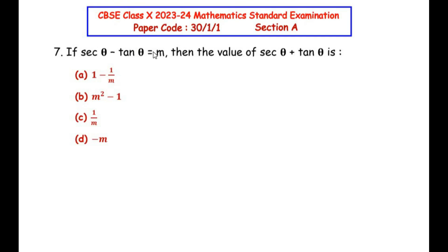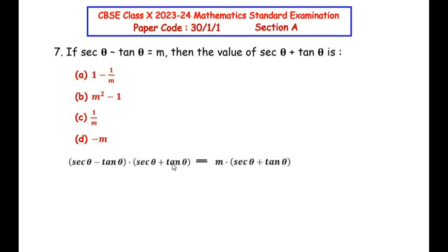We multiply both the left-hand side and right-hand side of the equation by (sec θ + tan θ). The left-hand side becomes (sec θ - tan θ)(sec θ + tan θ), and the right-hand side becomes m(sec θ + tan θ). Notice the left-hand side is of the algebraic form (a - b)(a + b).